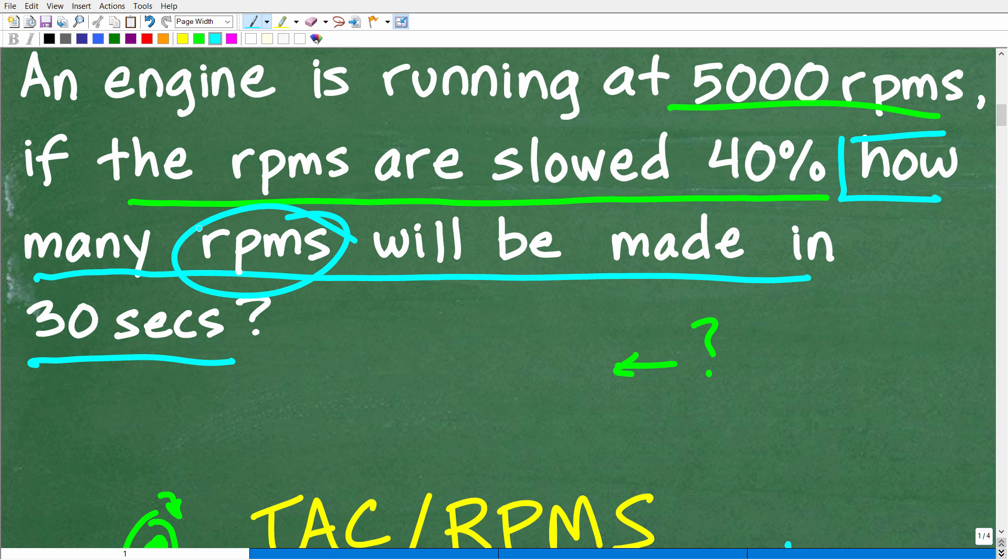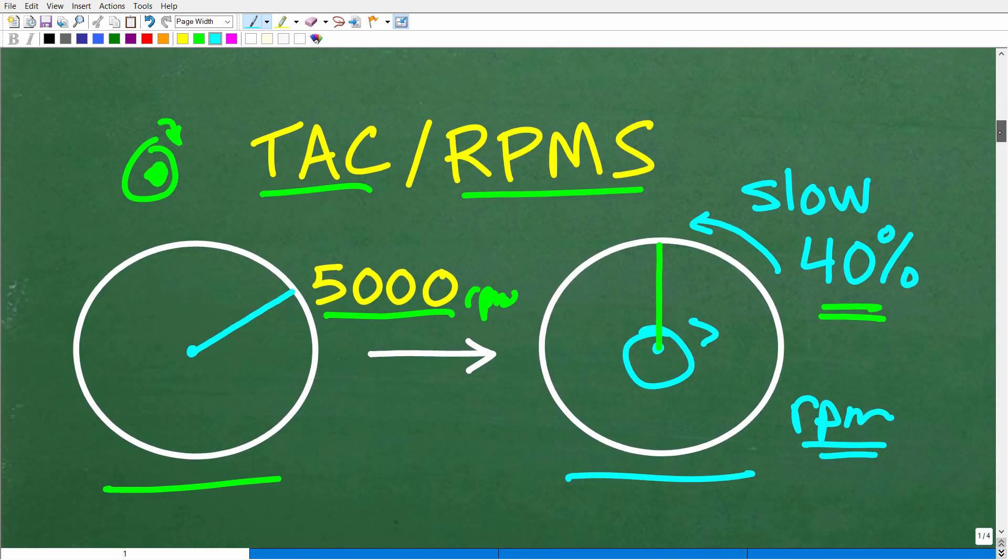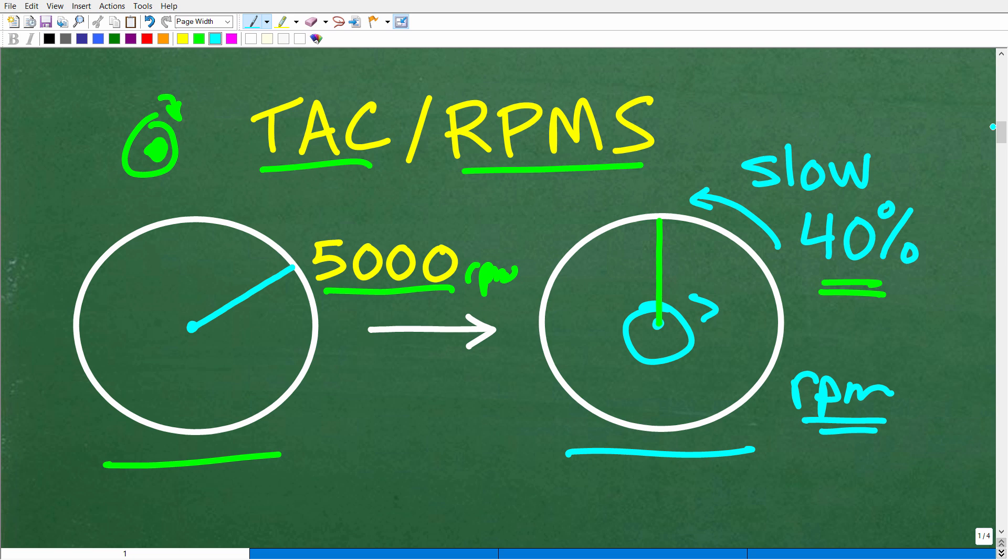Because that's revolutions per minute, but, of course, we're under a minute, so how many revolutions will be made in 30 seconds? Okay, so, again, not to be redundant, we just want to really be clear and visualize, you know, the mechanics of the problem. Okay, so, we're at 5,000 RPMs. We're going to slow down 40%, and then we're going to figure out how many RPMs or how many revolutions the engine will be turning in 30 seconds. All right, so that is kind of the model.